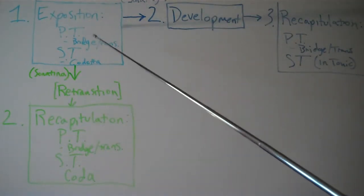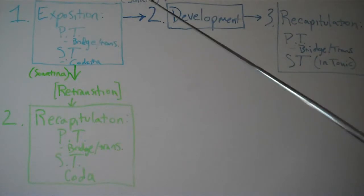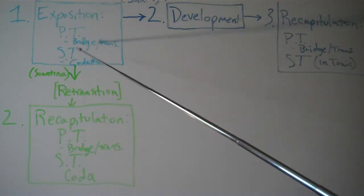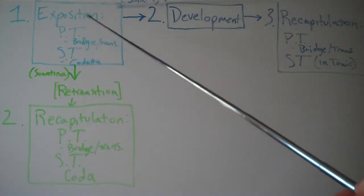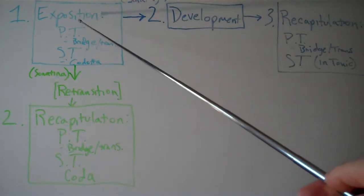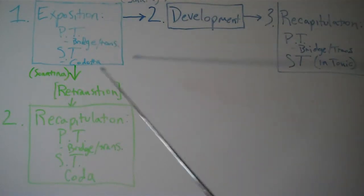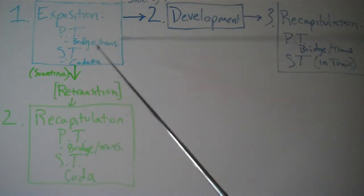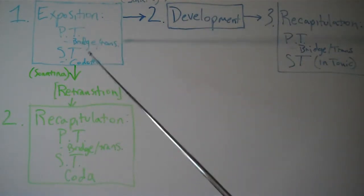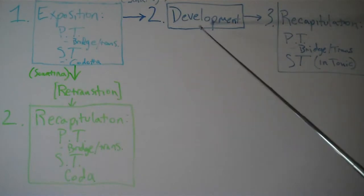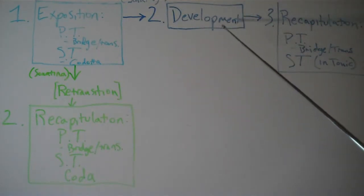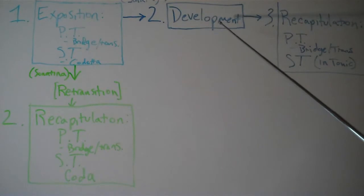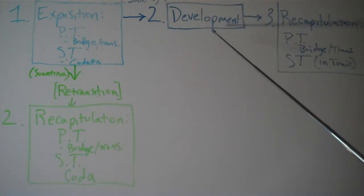We see here that the sonata, after the principal and subordinate theme — the principal theme being in the tonic, and the subordinate theme in a related key — goes into the second main section of the form: the development. Whereas the sonatina is lacking the development section.